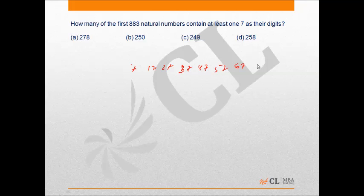67, 72, 79, 87, and 97. In all, there are 19 such numbers that contain at least one 7 as their digits out of the first 100 natural numbers.